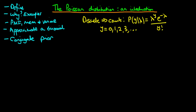In this video I want to continue our introduction to the Poisson distribution. We're going to derive the mean of a Poisson distribution, state its variance, and see how the selection of the parameter lambda determines the shape of the Poisson distribution via a MATLAB simulation.